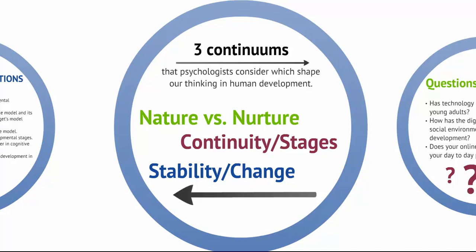How does genetic inheritance and experience influence our development? The second is continuity versus stage — is development a gradual, continuous process, such as an elevator, or does it proceed in a sequence of stages, like a ladder? And finally, stability versus change: do our early personality traits persist through life, or do we change as we age?